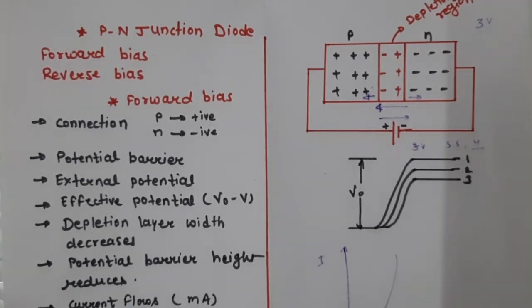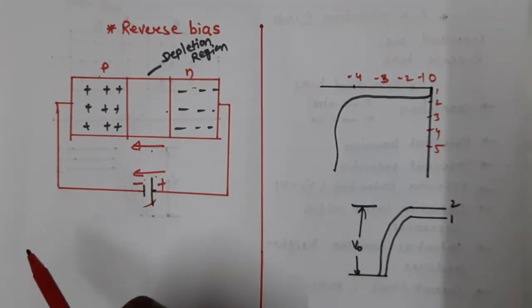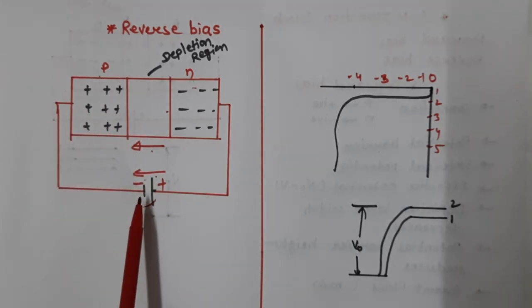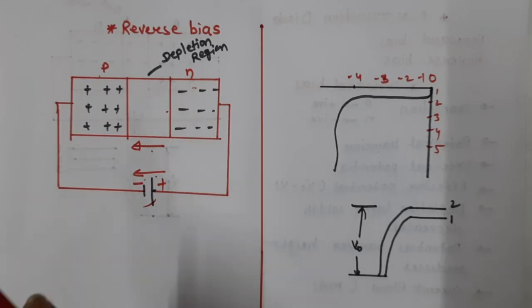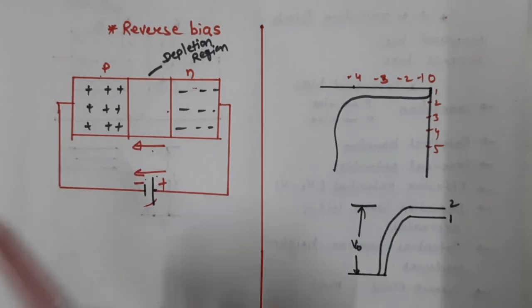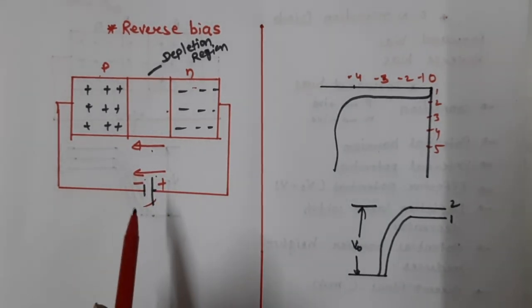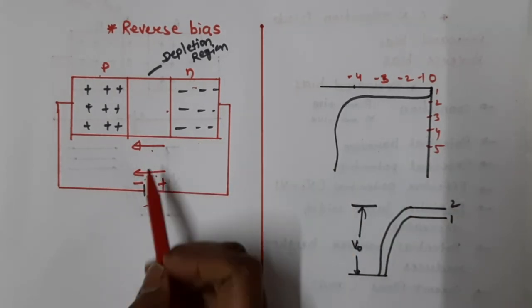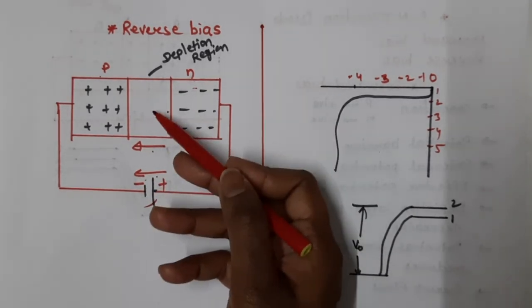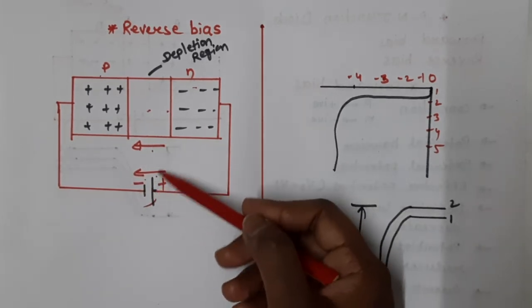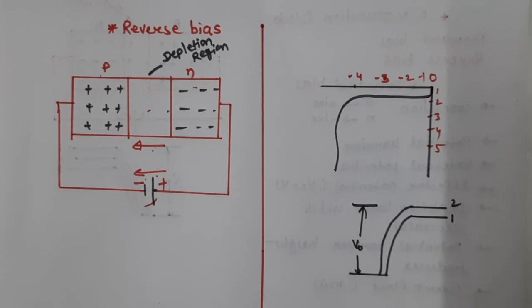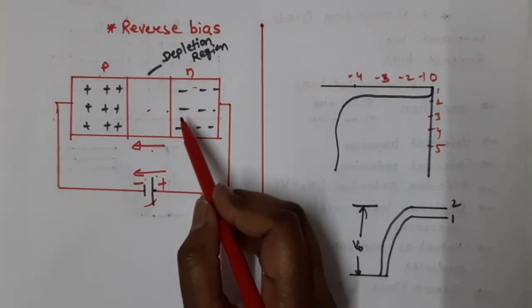I hope forward biasing is clear. Now we will study reverse biasing. Reverse biasing is just the opposite of forward biasing — the P-type semiconductor is connected to the negative terminal of the battery and the N-type semiconductor is connected to the positive terminal. In reverse biasing, the electric field of the depletion region and the electric field of the external battery are in the same direction, so the effective voltage increases.